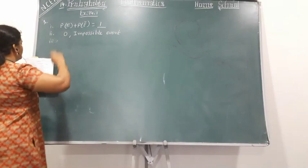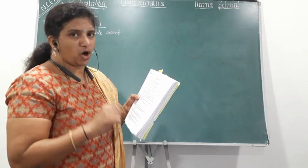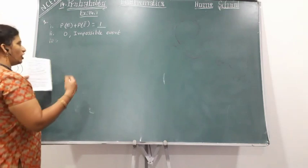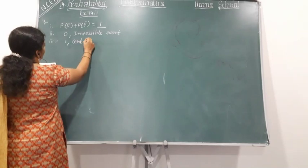Coming to your third bit — a similar bit. The probability of an event that is certain to happen: if it is possible, the value of the event is one. Such an event is called a certain event, sure event, or possible event. So the value is one and the answer is certain event.